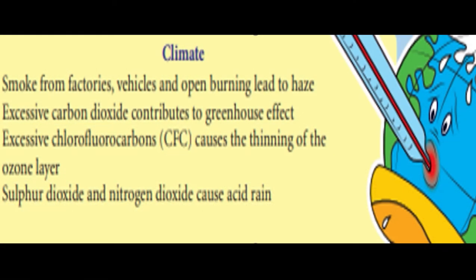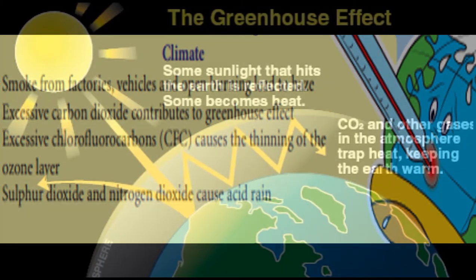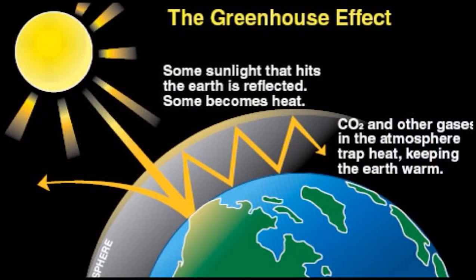Next, let's look at how air pollution affects our climate. Smoke from factories, vehicles and open burning leads to haze. Excessive carbon dioxide contributes to the greenhouse effect. What is the greenhouse effect? The earth's atmosphere has always acted like a greenhouse to capture the sun's heat.